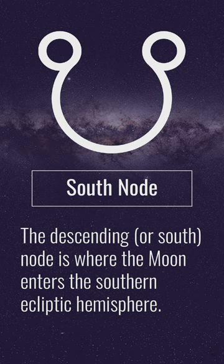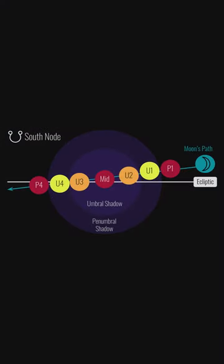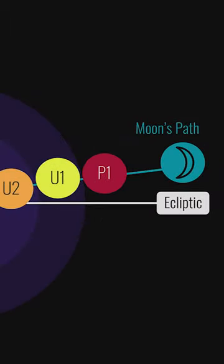They are astronomical points where the orbit of the moon intersects what's known as the ecliptic, which is the perceived path that the sun moves through our sky.